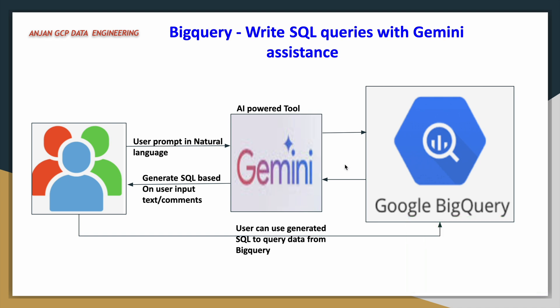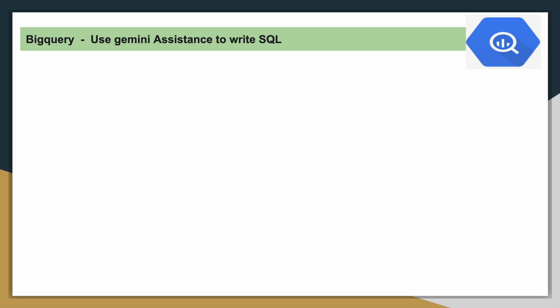Right now, Gemini assistance is made available for BigQuery users. In a real-time scenario, it might be disabled by default. If you have to use this feature, you will need to enable the Gemini assistance in BigQuery Studio. Before we get into the demo, the first prerequisite is to enable the BigQuery Gemini features. This can be done by admins — you need to go to the BigQuery editor and enable this feature.